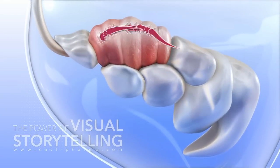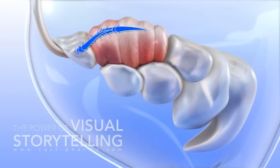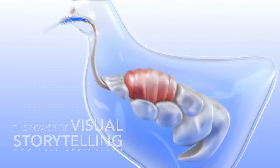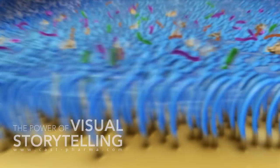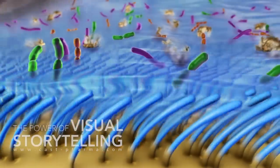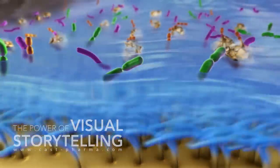Optimal respiratory integrity is defined as a normally functioning respiratory system that allows the birds to reach their full genetic potential.